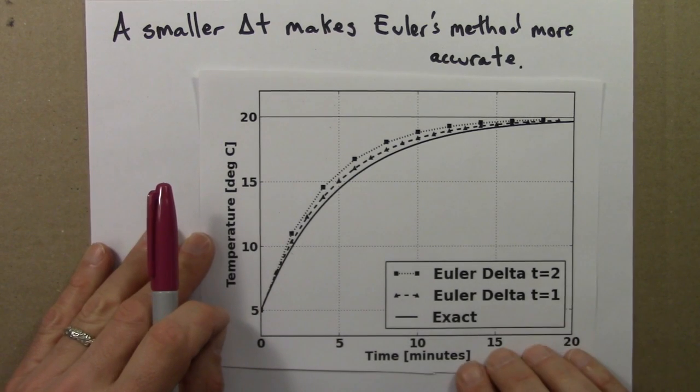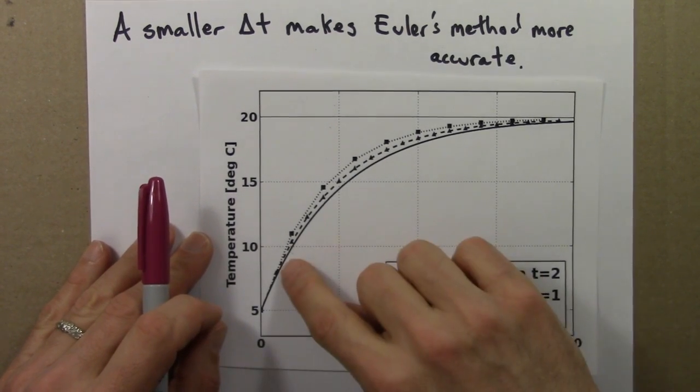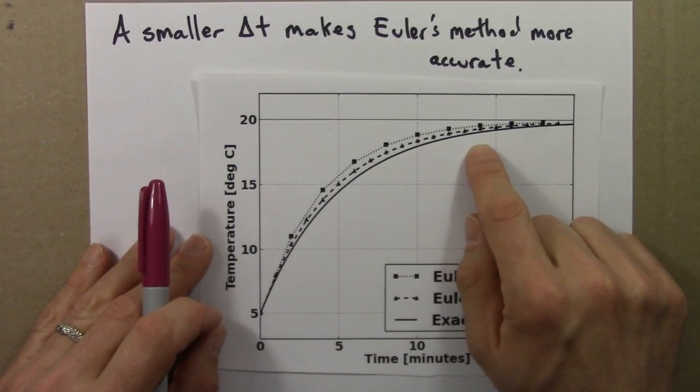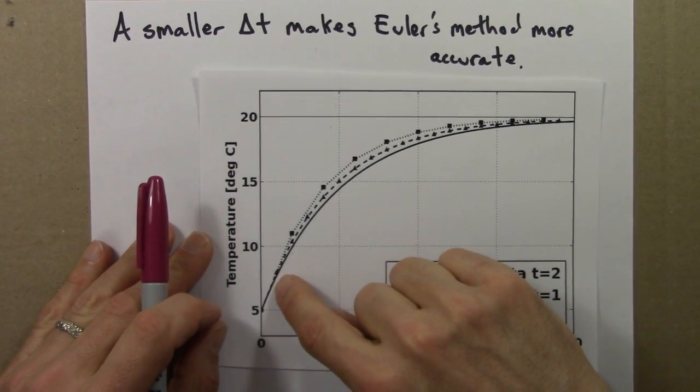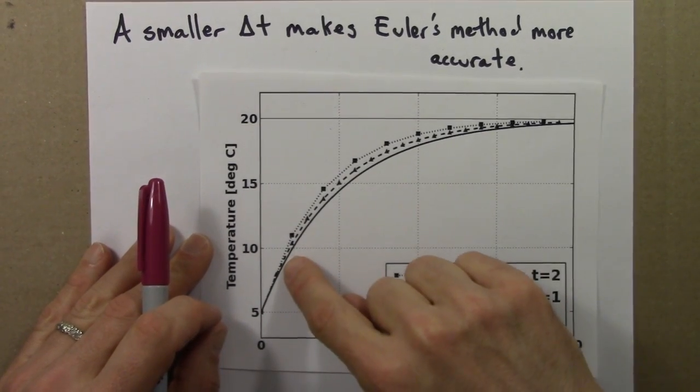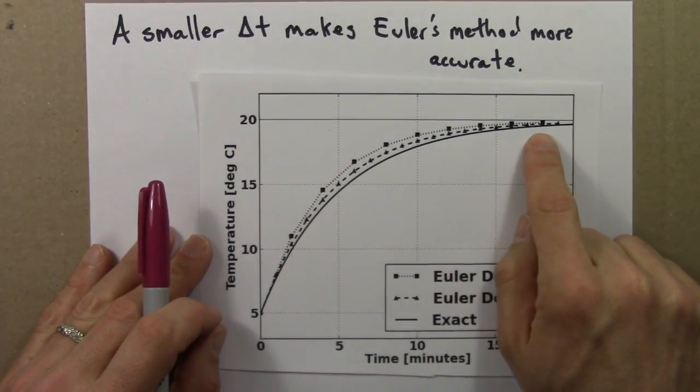And by now, you can probably guess how we could make this better and better and better. We would let delta t get smaller and smaller and smaller, and then we would see that the Euler method would be exactly on top of this line.